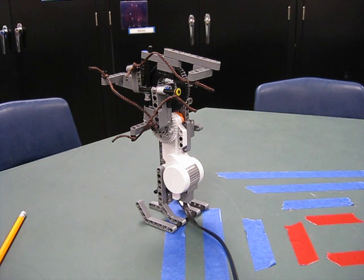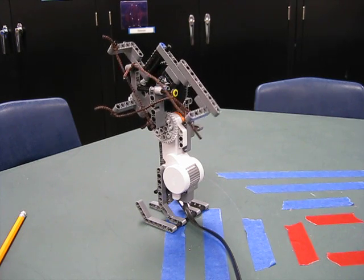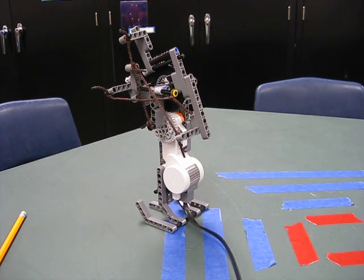This end effector models the one on the International Space Station arm, which uses three cables to grasp objects. This is the Lego project to demonstrate that.